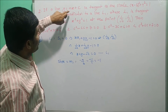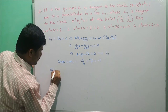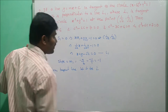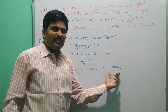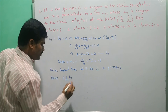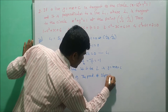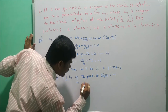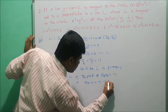The given line L: y = mx + c is tangent to the circle and perpendicular to L1. Since L is perpendicular to L1, the product of slopes equals -1. The slope of L is m and slope of L1 is -1, so m × (-1) = -1, which implies m = 1.